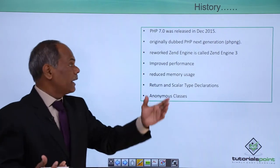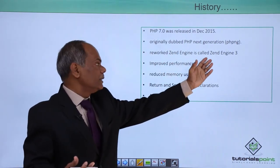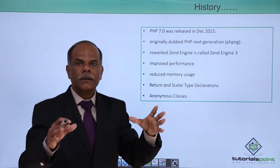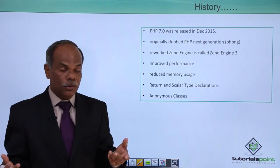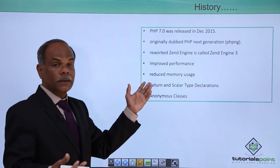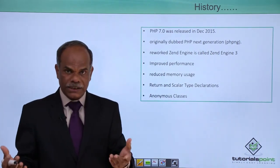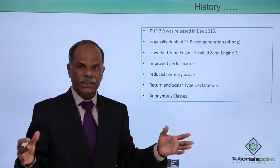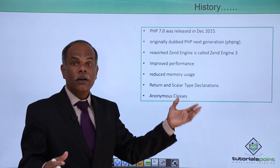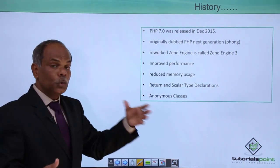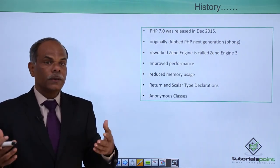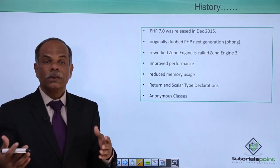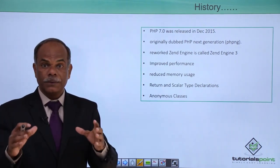What is new about PHP 7? It has a reworked Zend engine called Zend engine 3, with improved performance and reduced memory usage. The scalar type declarations, argument type declaration, and return type declaration are marked changes in PHP 7.0. It also has support for anonymous classes. We are going to have a dedicated session on the new features of PHP 7.0. This was all about the history and development of PHP. In the next session, we shall see how the PHP setup is installed on your computer system.